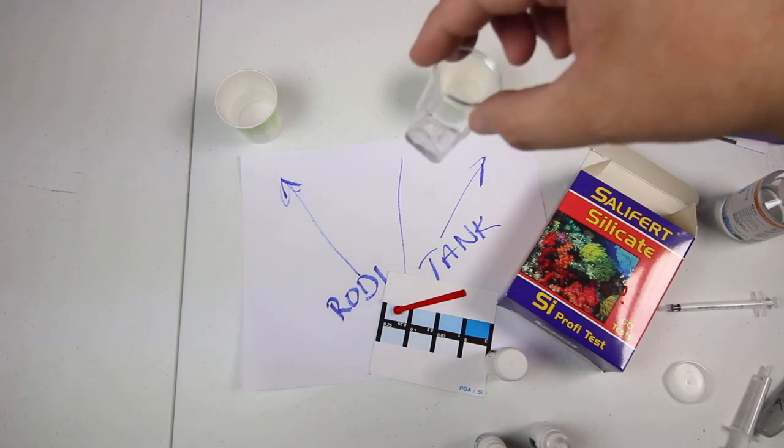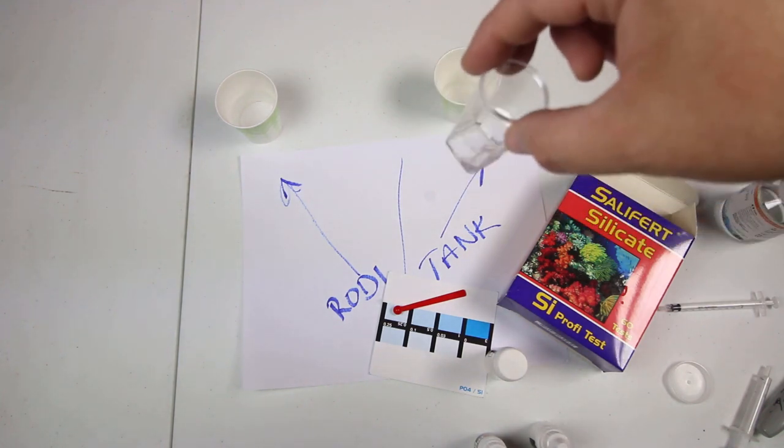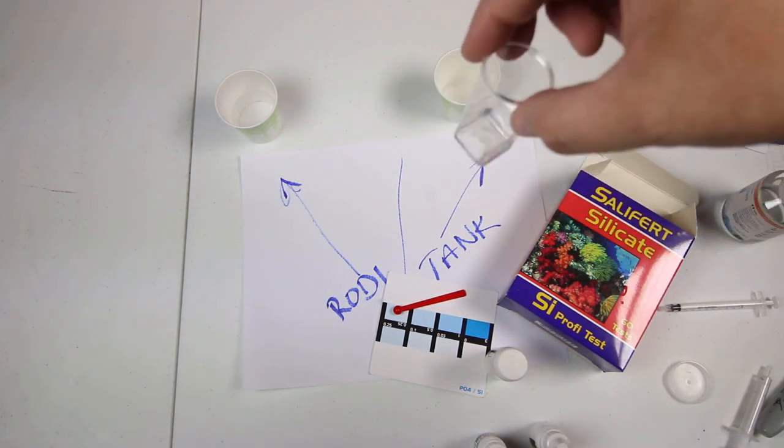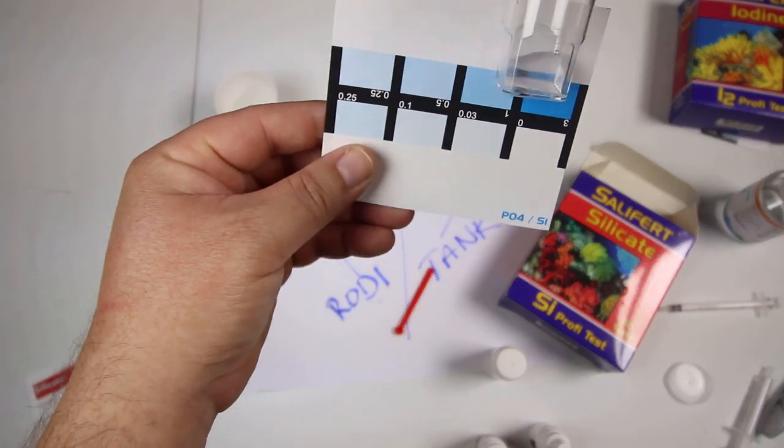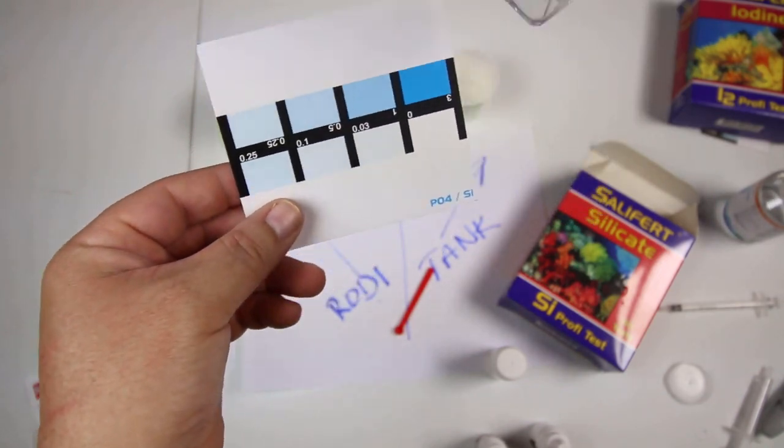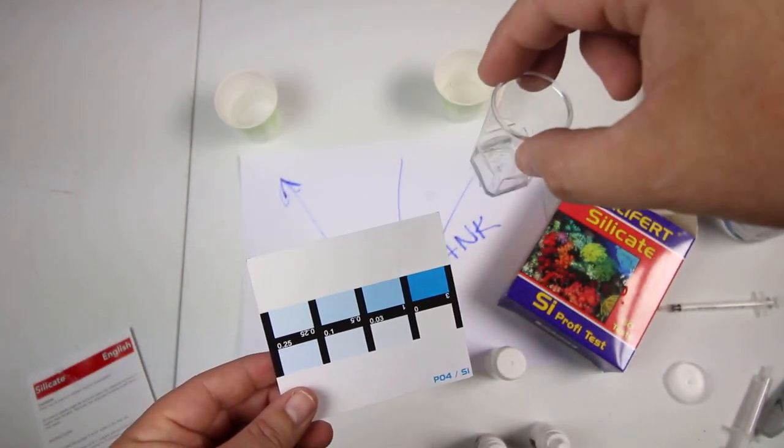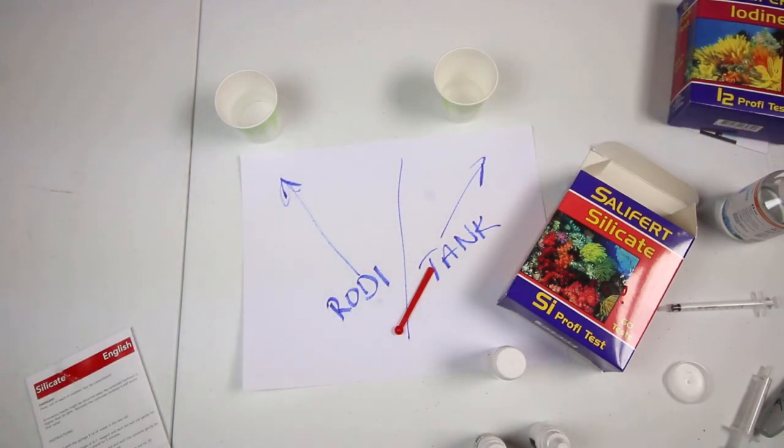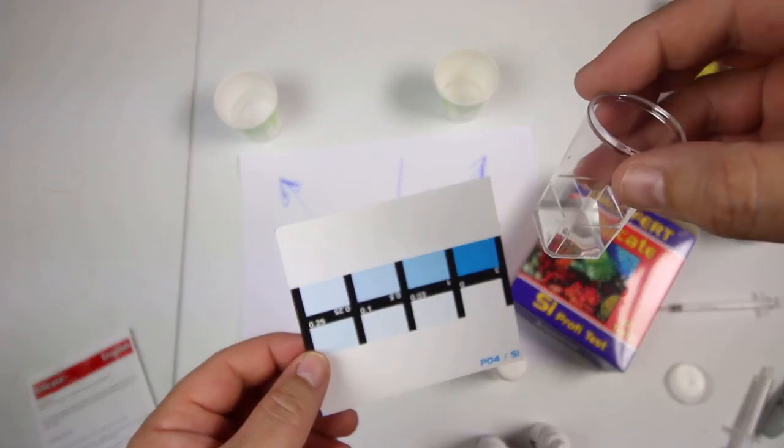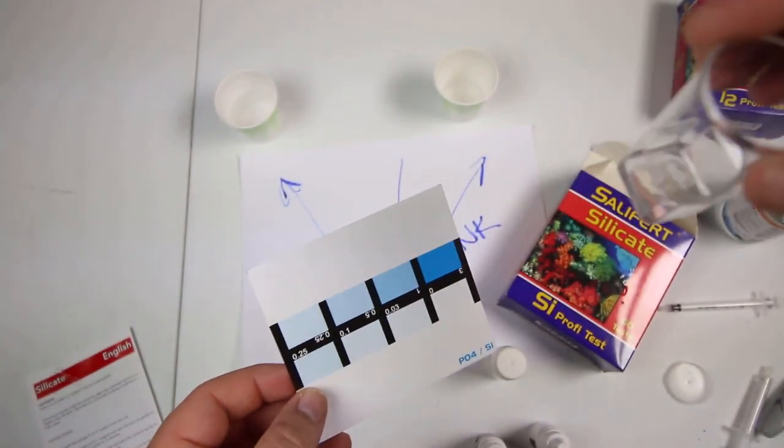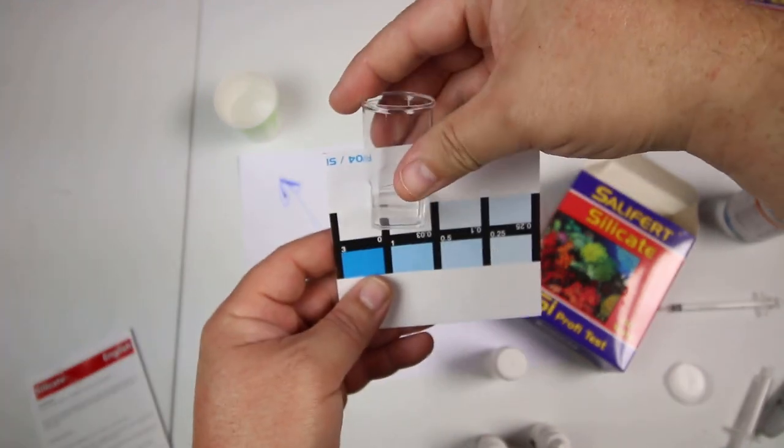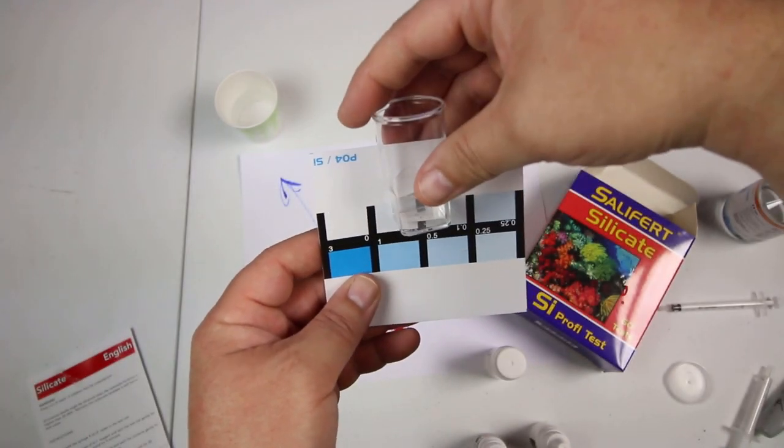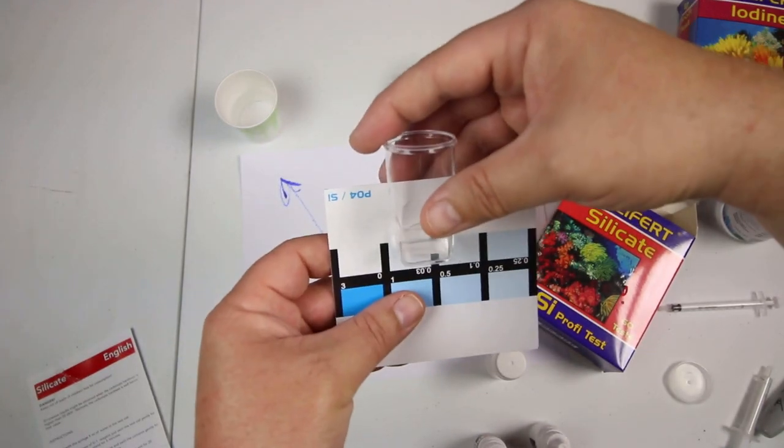Then when it's complete we're going to take our color chart and for the low range we are going to compare by looking through the side of the test vial. So if we look here they do say you want to use diffused light to help get an idea. I would say I'm anywhere between zero and 0.03. Looks like we're pretty decent sitting at somewhere less than 0.03 at least.